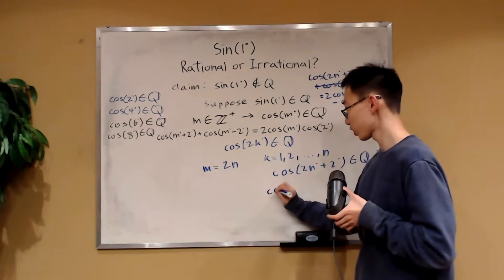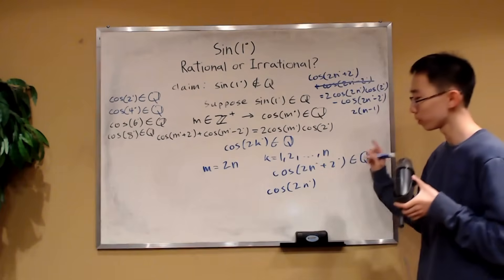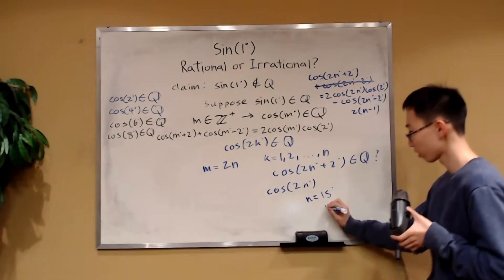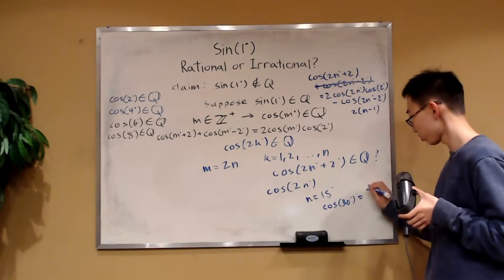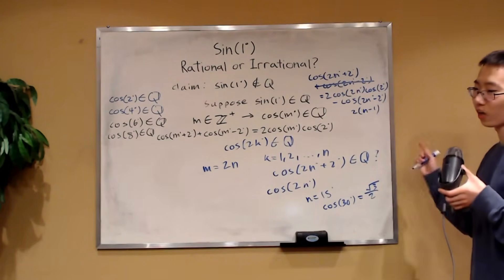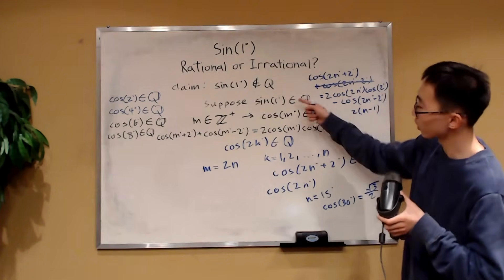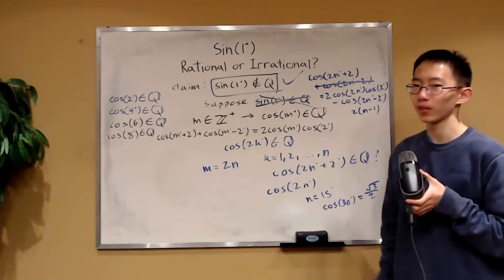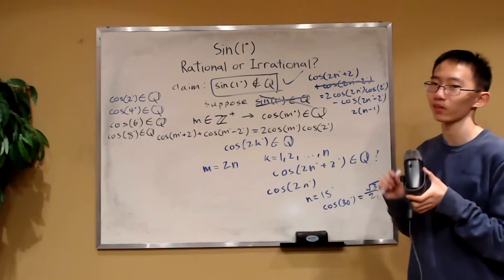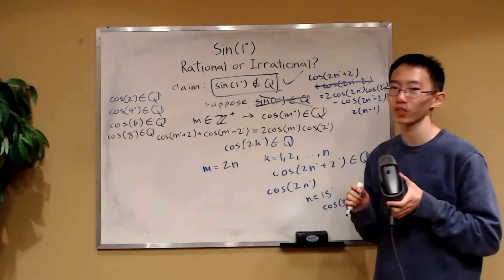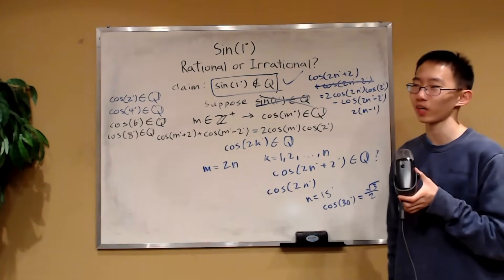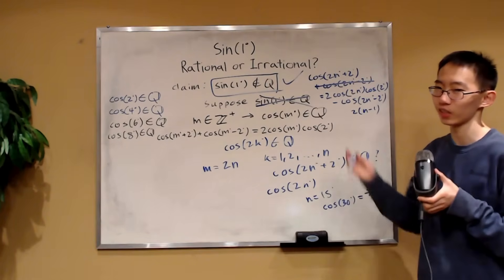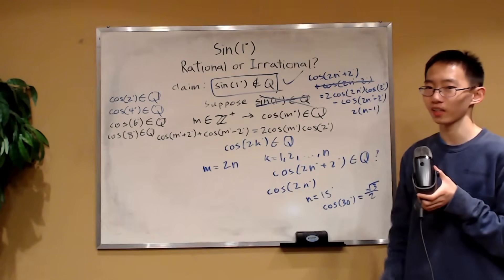But hold on — if cosine of 2n degrees is always rational, that's a contradiction. Because famously, when n equals 15, cosine of 30 degrees equals root 3 over 2, which is clearly not rational. So we've reached a contradiction, and therefore our assumption that sine of one degree is rational is false — sine of one degree is irrational. Throughout this problem, we combined proof by contradiction with proof by induction, which is a clever way to prove that something does or does not belong in a set.